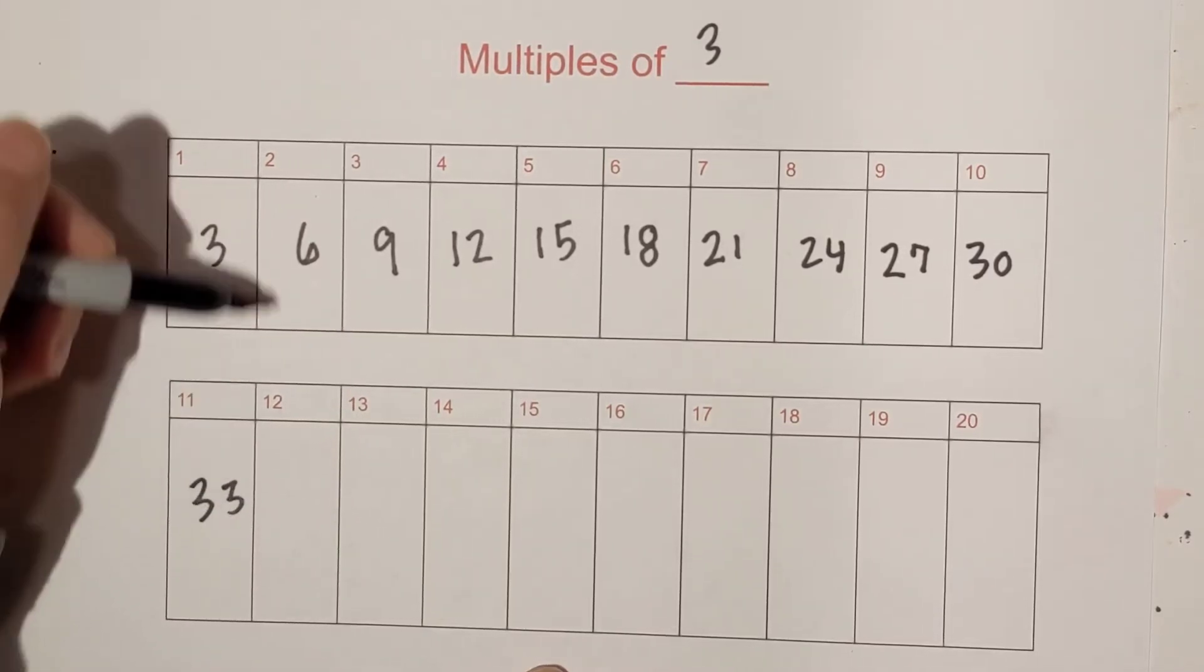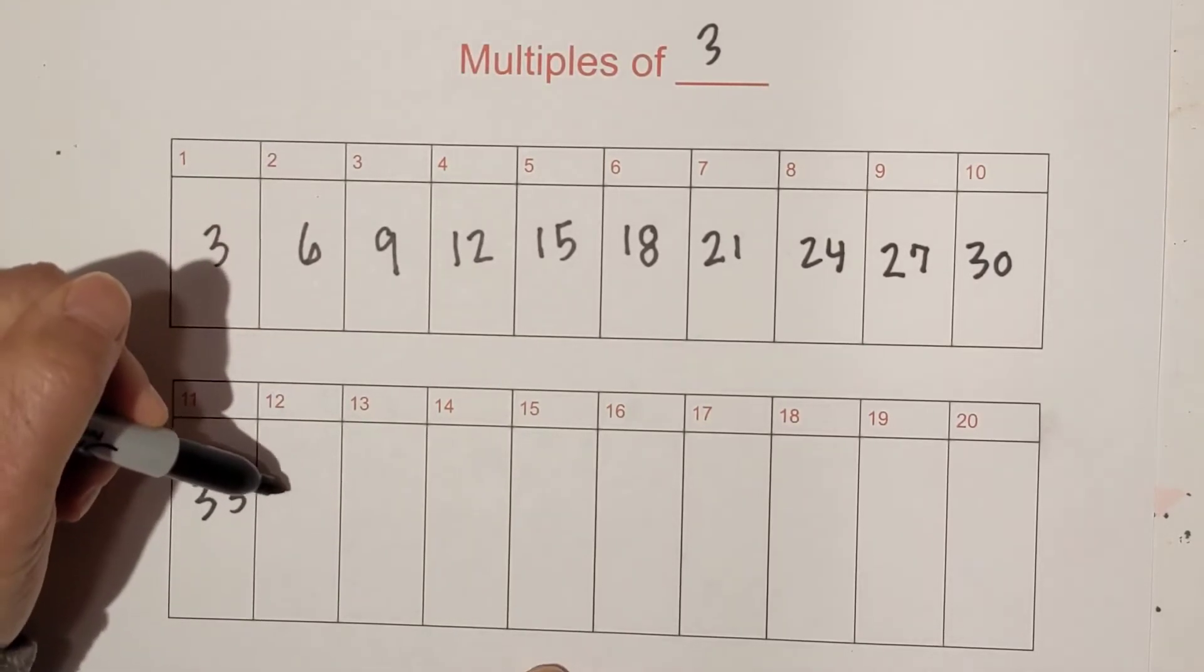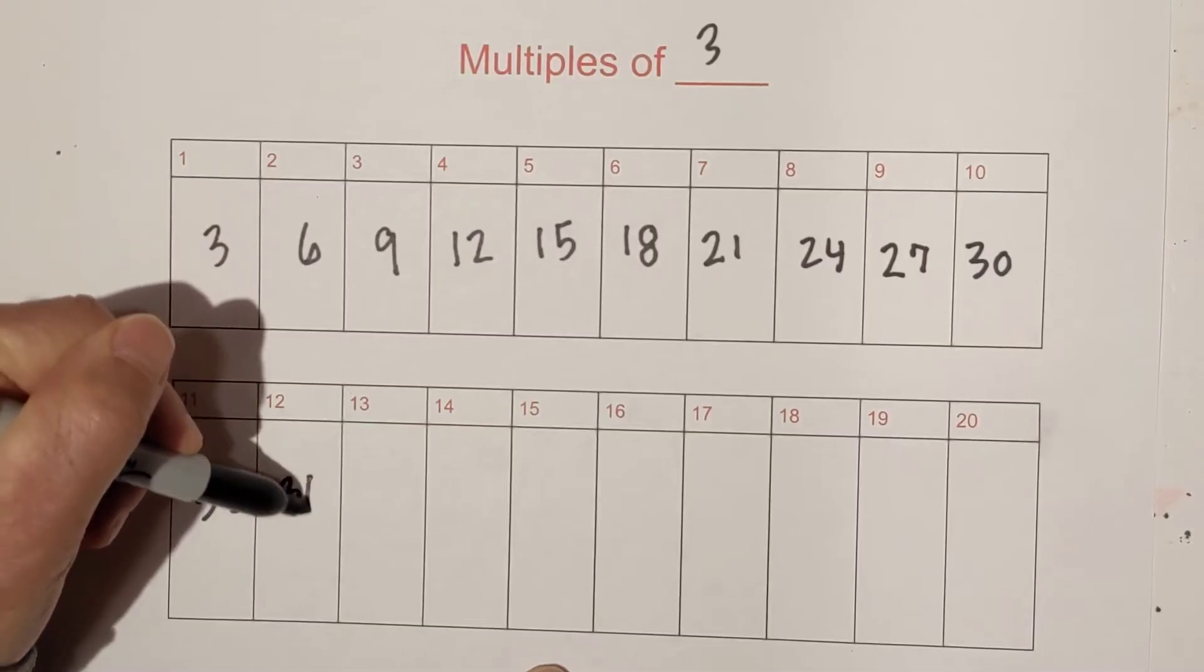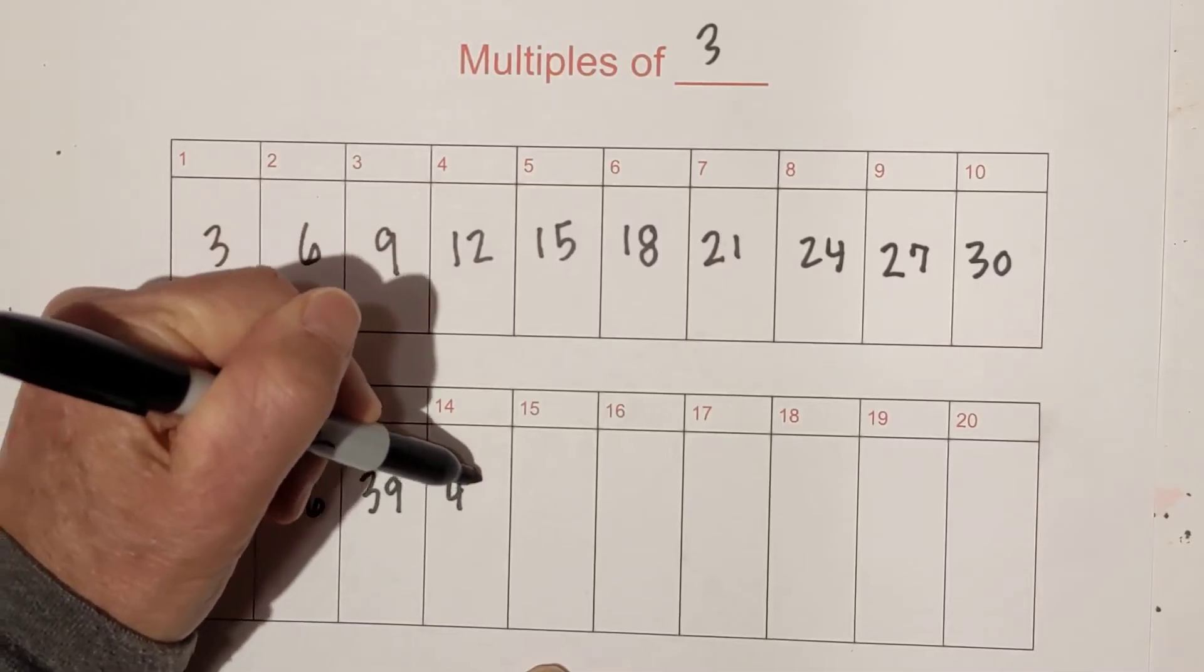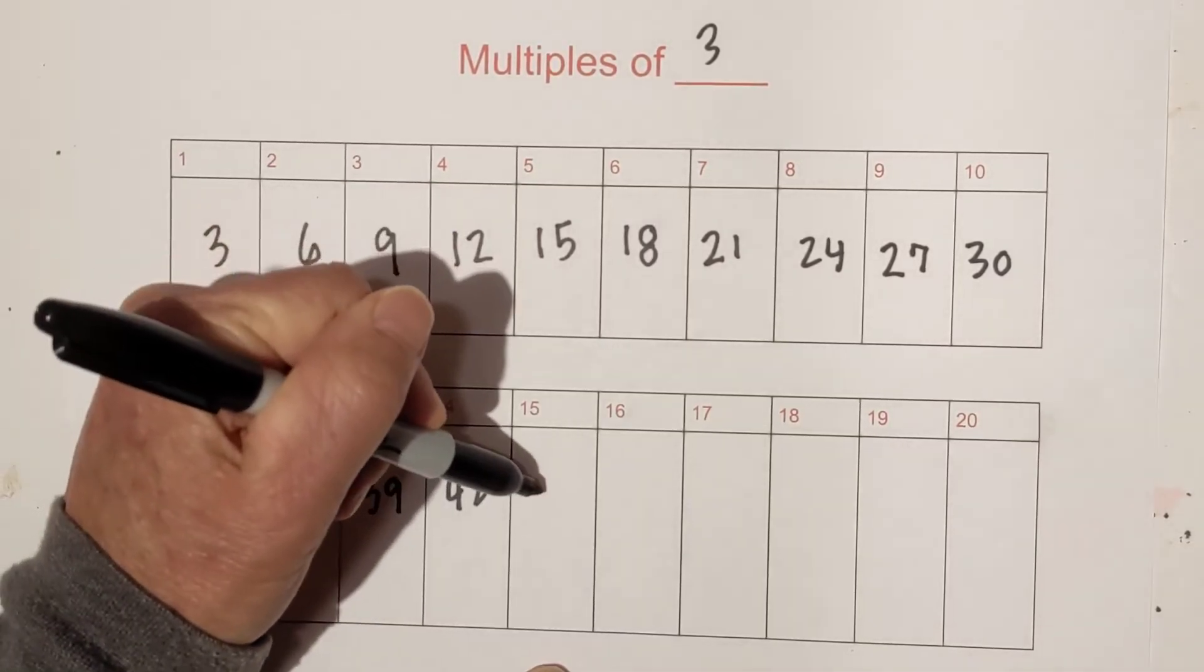So now we have 33, 12 times 3 is 36, then 39, and then 14 times 3 is 42. You can see how the pattern is repeating.